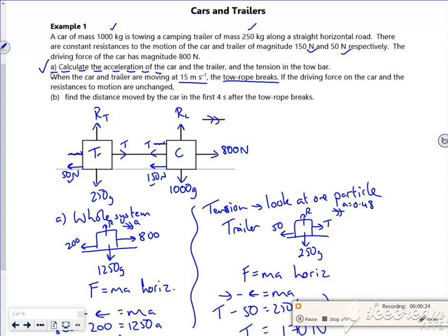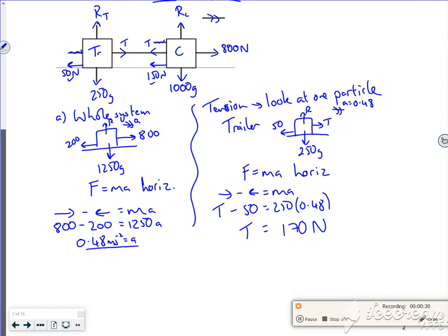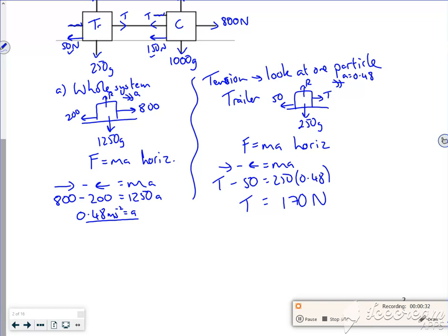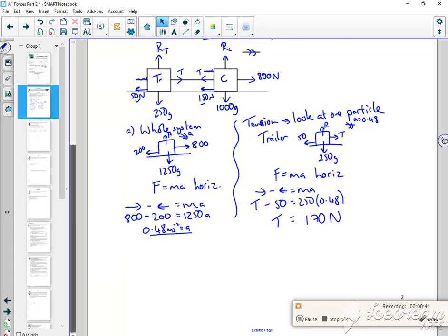So it's the car in the first four seconds. Imagine you're in that car when the rope breaks. What's going to happen? The trailer is going to slow down, but initially the car is going to accelerate. So we have an issue because the acceleration has changed.